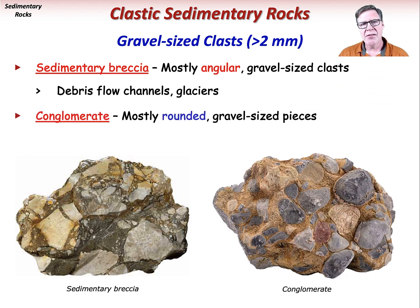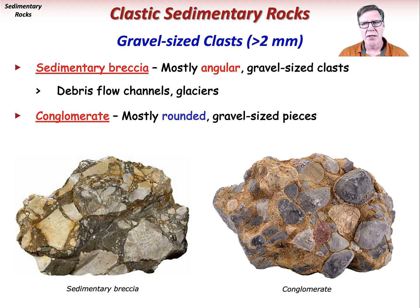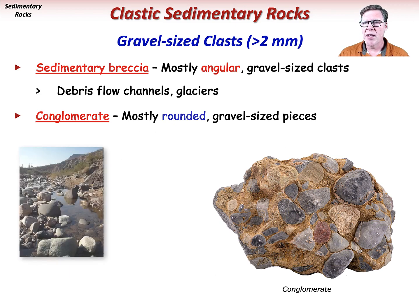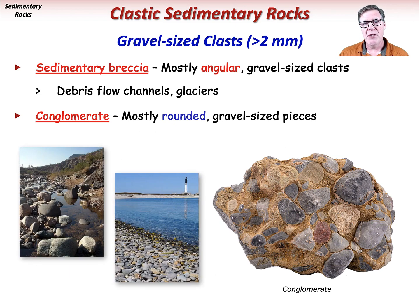If most of the clasts are rounded, then it's a conglomerate. These can range from poorly sorted to very well sorted, depending on the environment. The grain size and rounding suggest longer transport distances in high-energy conditions, like a stream channel or beach.